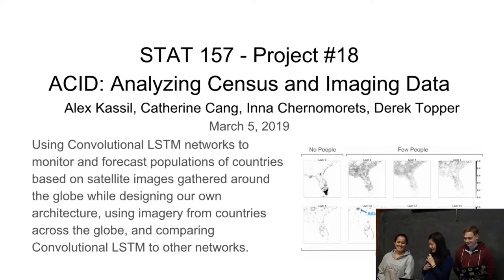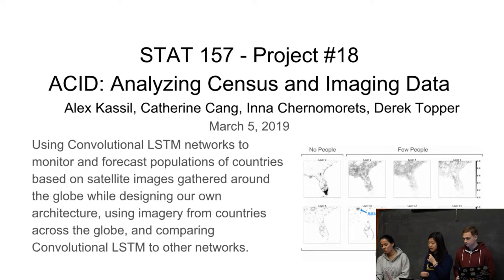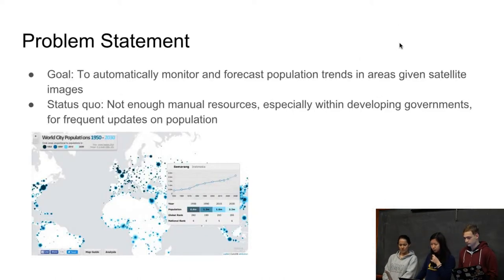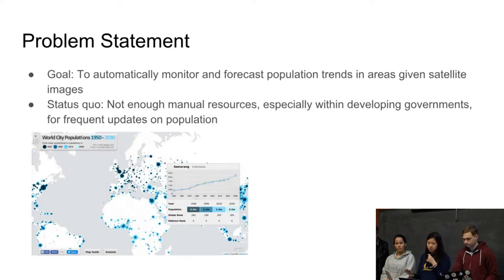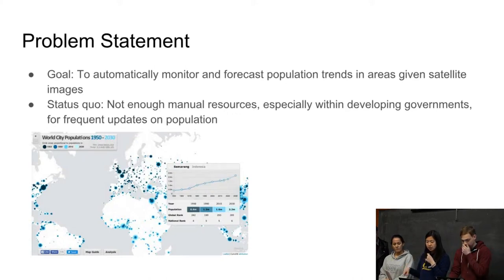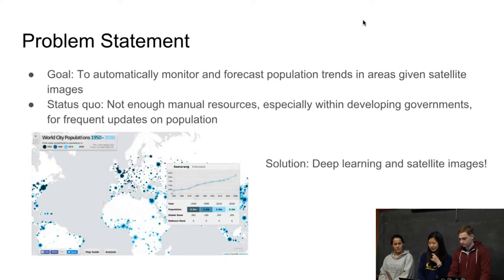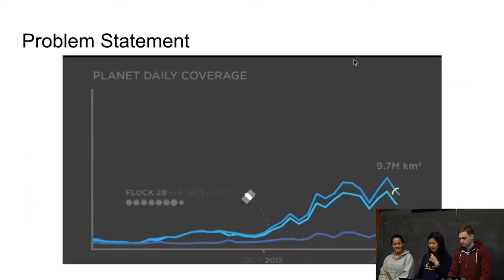The general idea of our presentation is we want to use newer deep learning models and higher quality satellite image data in order to improve population prediction and forecasting in various regions around the world. Our goal is to automatically monitor and forecast population trends in areas given satellite images. Currently, there aren't enough manual resources for manually counting the population, especially within developing countries, for frequent updates on population. So our solution is deep learning and satellite images.